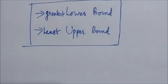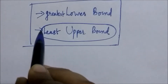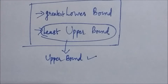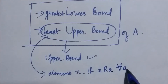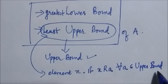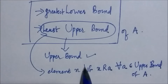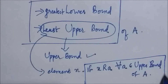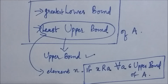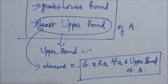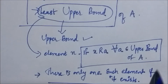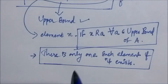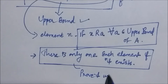The least upper bound (LUB) of a set A is an element x such that x is related to all elements in the set of upper bounds of A. In other words, x must be related to every upper bound of A. It is the case that there is only one such element if it exists — meaning the least upper bound is unique if it exists. You can prove this by contradiction as an exercise.